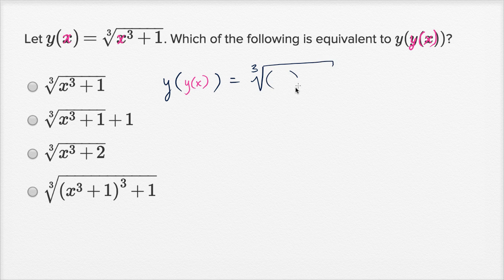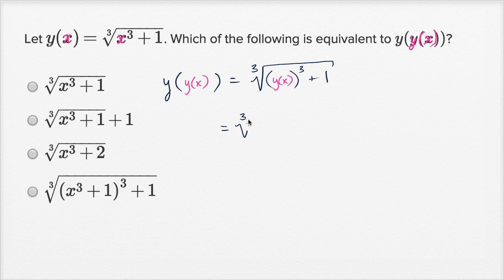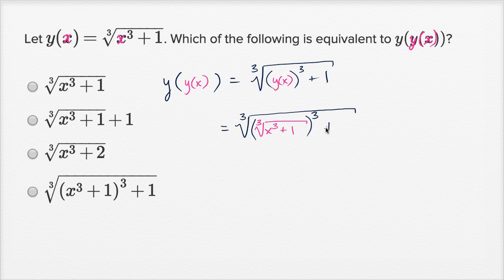So we're going to have something to the third power plus one, and in that case that something is y of x. So what's y of x equal to? It's equal to all of this business. So this is going to be equal to the cube root of — y of x is the cube root of x to the third plus one — now we're going to raise that to the third power, plus one. And so we just have to evaluate this.